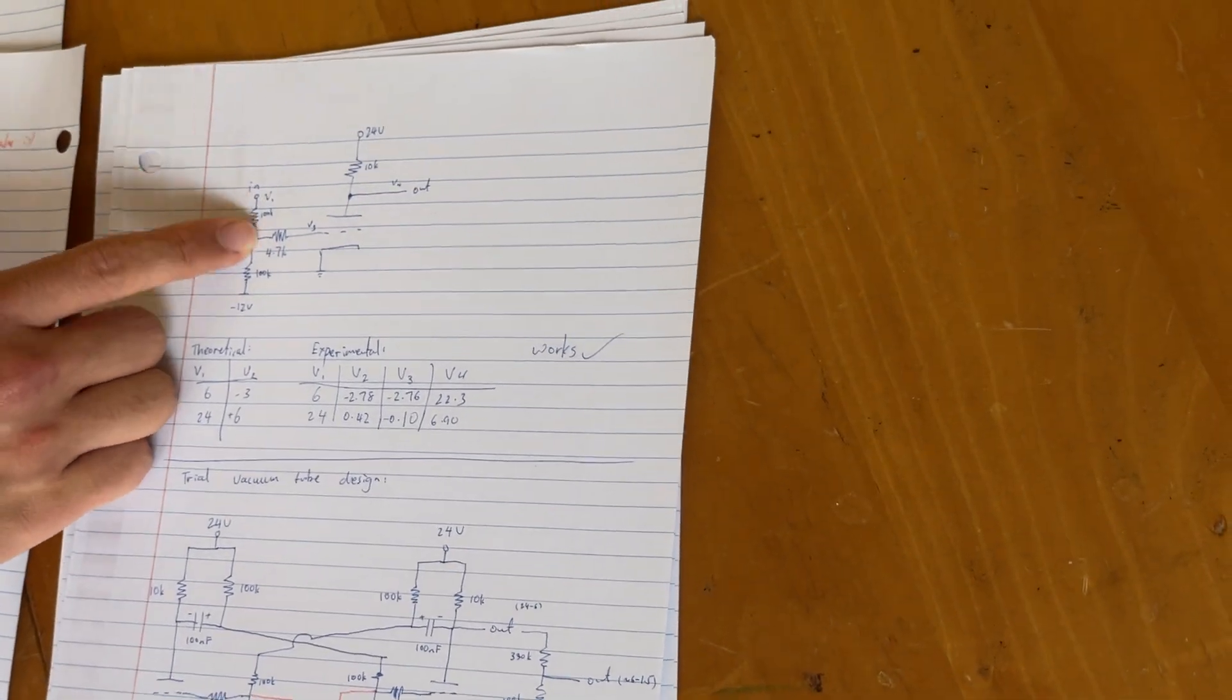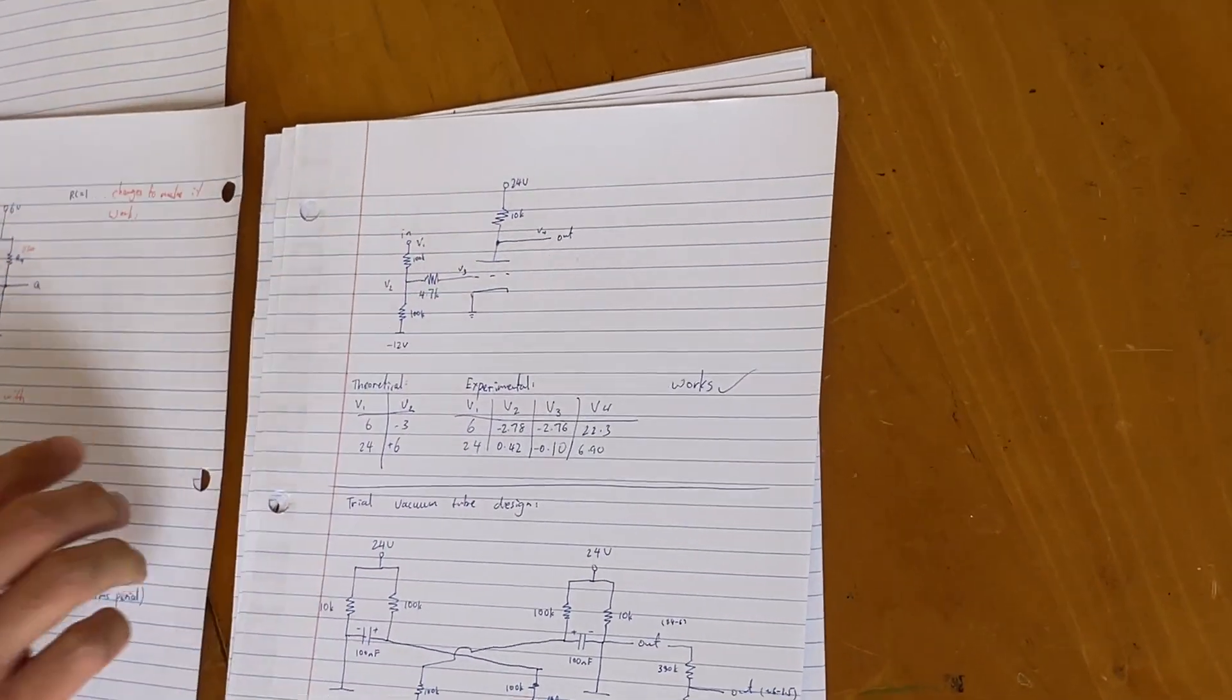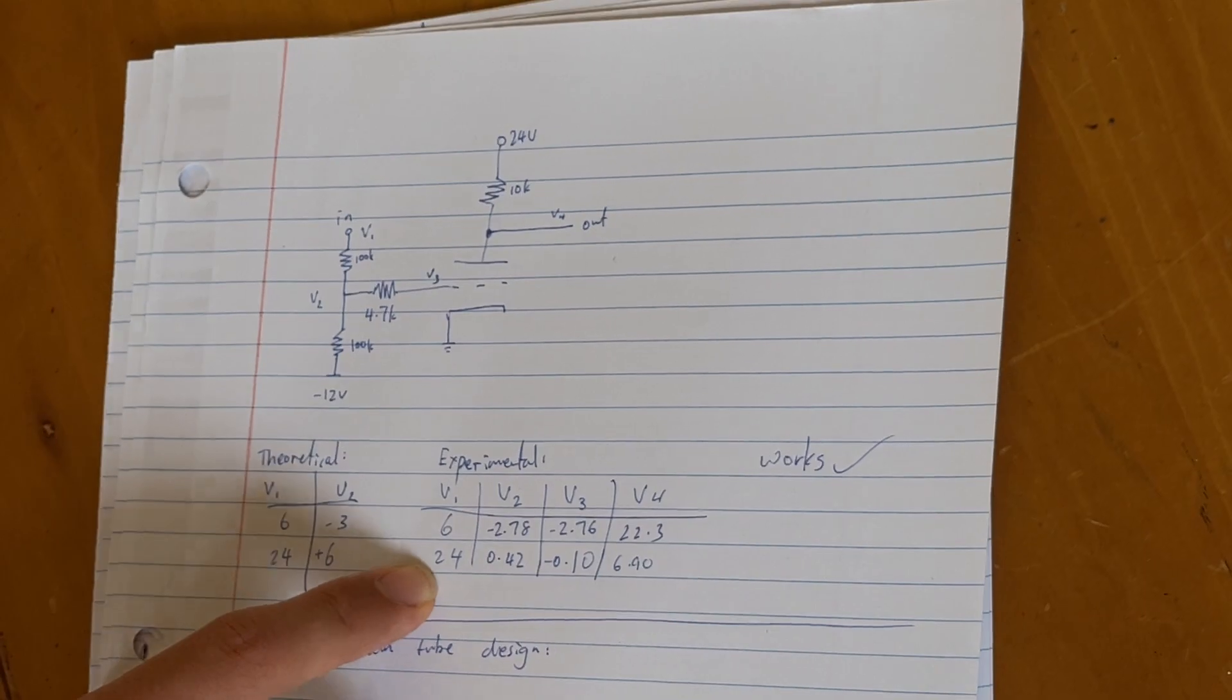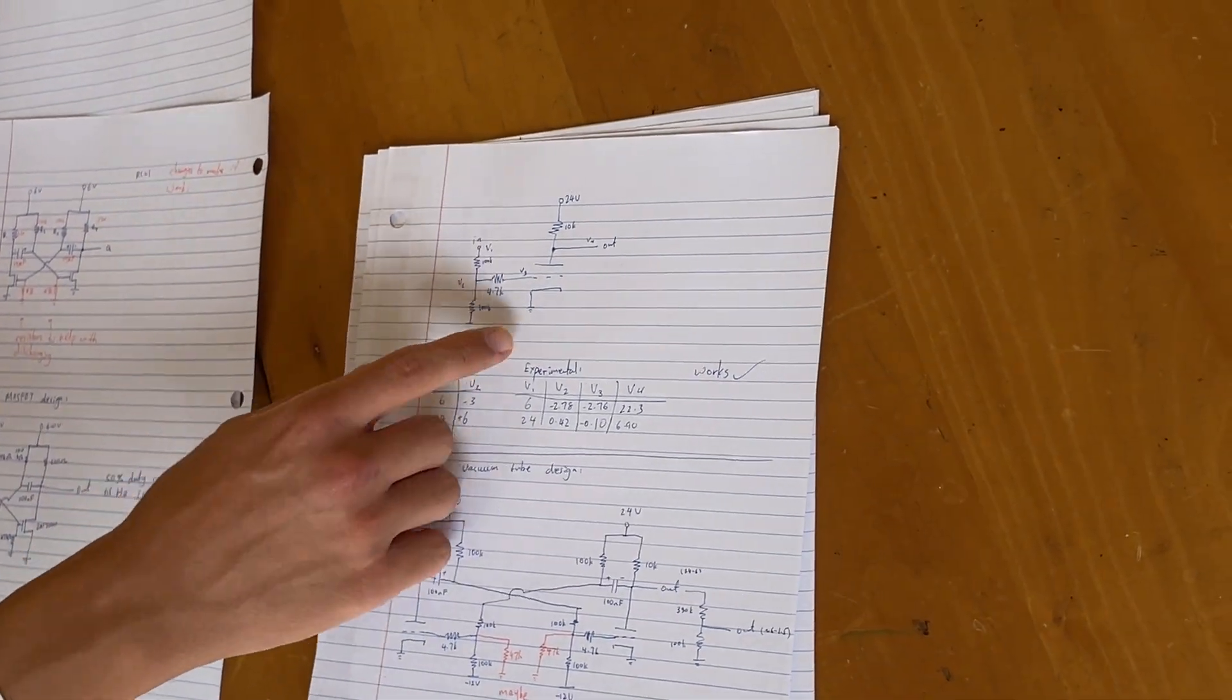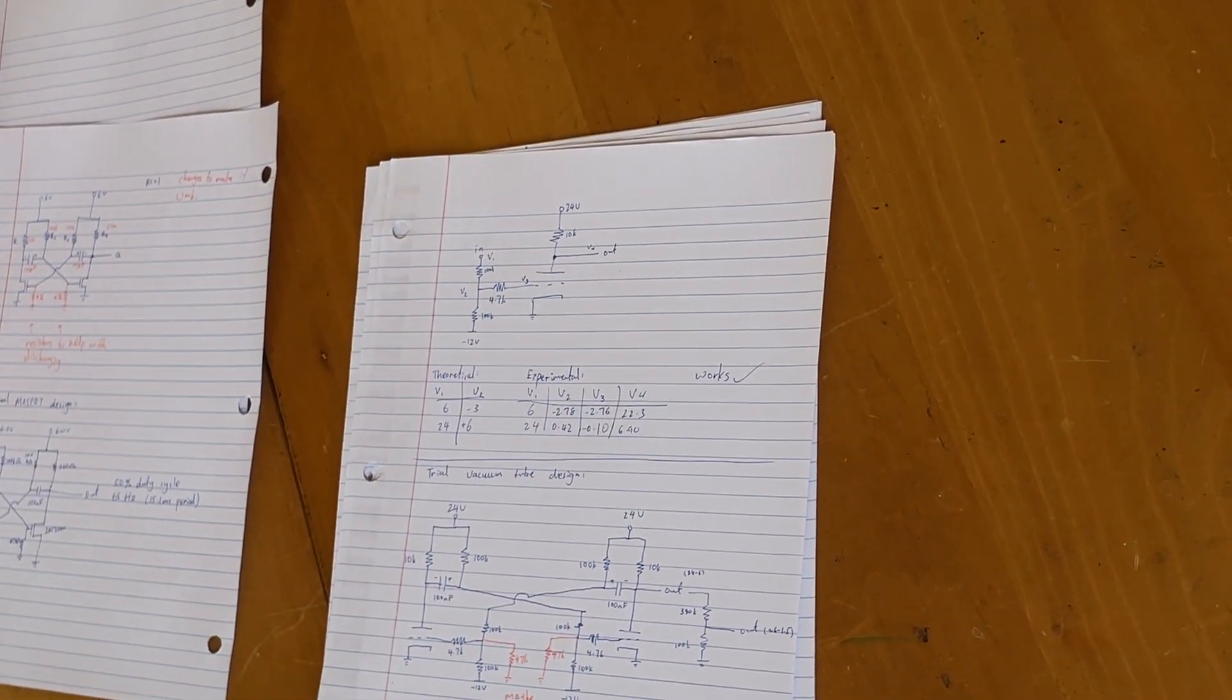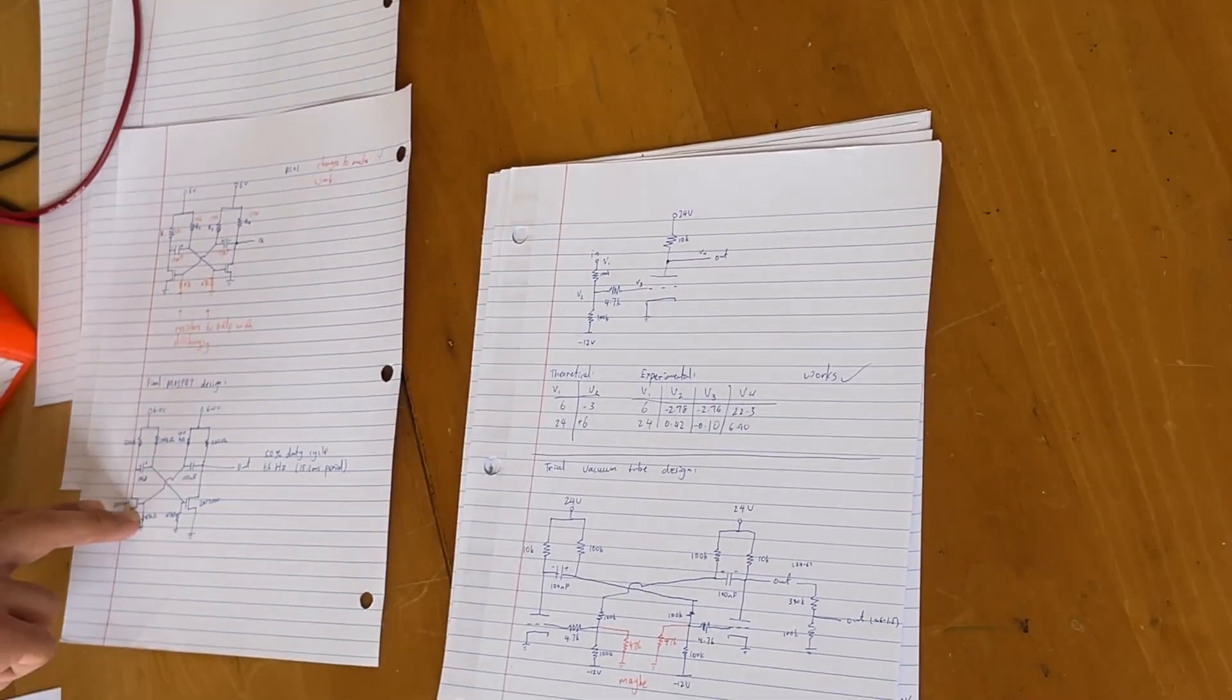I looked at resistor networks on the grid of the vacuum tube and trying out all sorts of different values of resistors and measuring how much voltage is on the input and output. The idea is to make a vacuum tube that can behave as an inverter. And once you have a vacuum tube that can behave as an inverter, you can just put it in here in place of the MOSFETs.